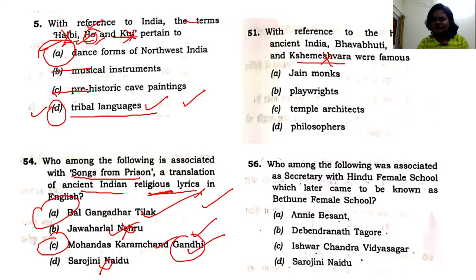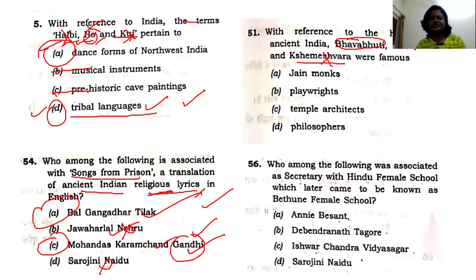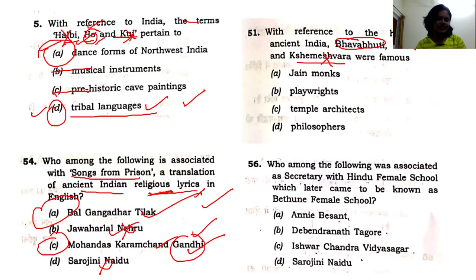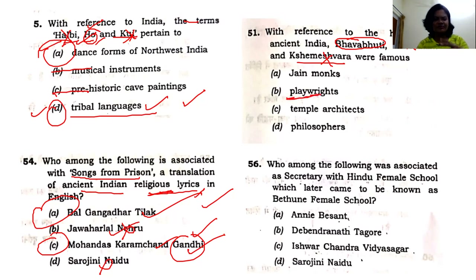The next question mentions Bhavabhuti, a very important playwright who is always equated with Kalidasa. Bhavabhuti is mentioned in your Tamil Nadu NCERT Part 1 book and in any history synoptic magazines. Just hearing the name Bhavabhuti, you should know it relates to someone who writes like Kalidasa — so the answer is playwrights. This is a direct question because Bhavabhuti is a very famous personality.